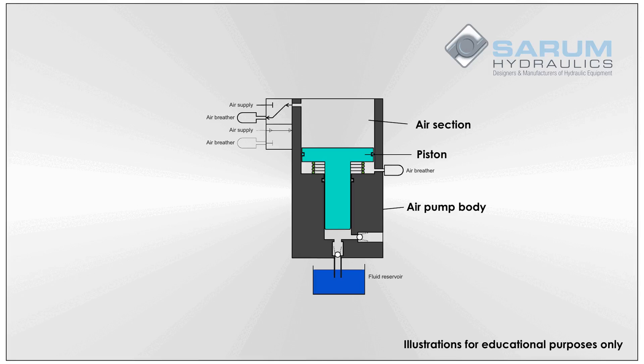The air section is on top and has a large piston. This piston is pushed down by air pressure from a compressed airline, and when it gets to the bottom of its stroke, a spring pushes it back up again. This motion will form a pump that cycles.